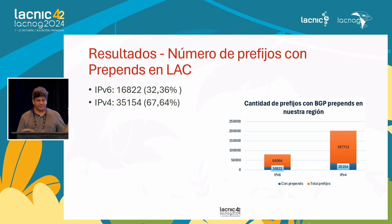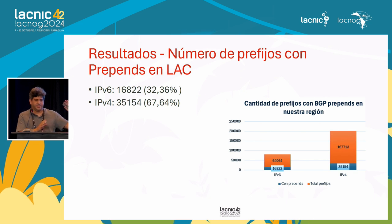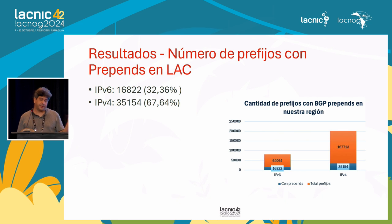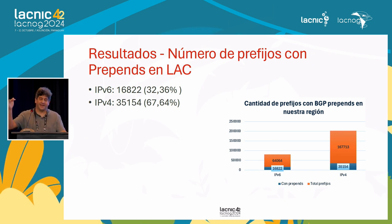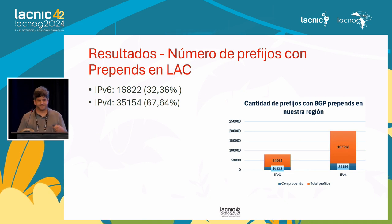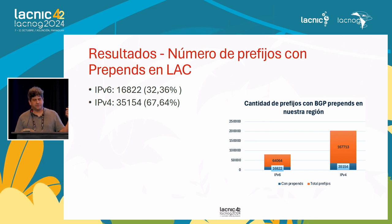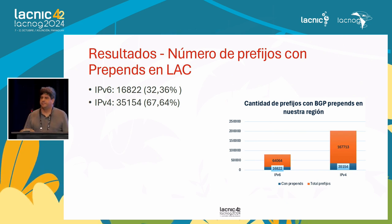Here we see the total prefixes — IPv6 to the right and IPv4 to the left — and how many have prepends. In the IPv4 world, there are 167,000 prefixes in the region, 35,000 of which have prepends. In the IPv6 world, 64,000 prefixes and 16,000 of them have prepends.